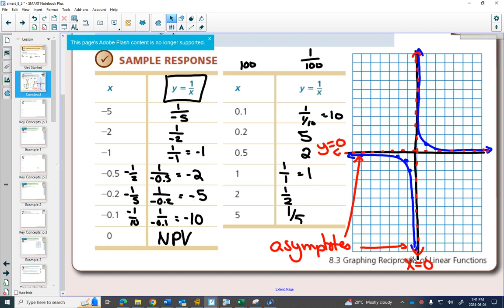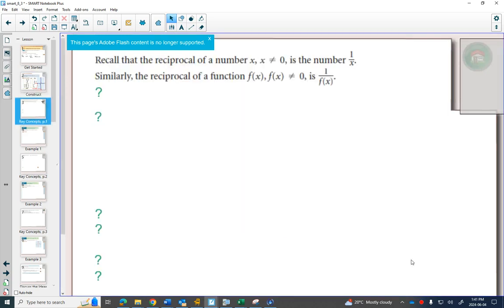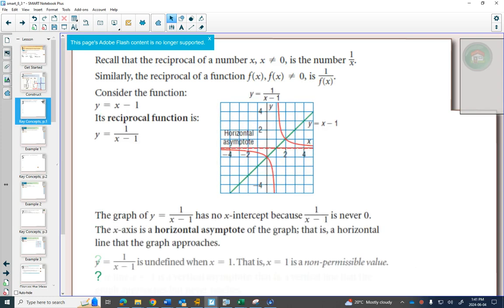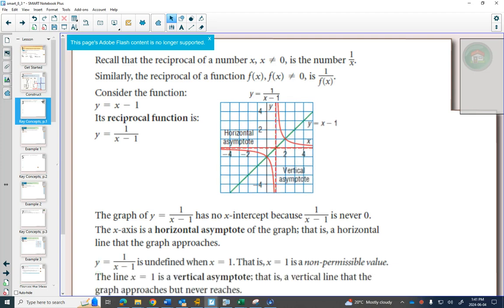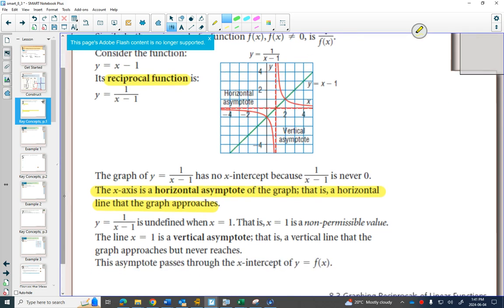And these are reciprocals. So we can highlight a few things on our notes here. We've got our function here. So these are called, we can highlight reciprocal function. So some things. We talked about the x-axis is a horizontal asymptote. And does it make sense that it has no x-intercept? Because if you do a reciprocal, can you tell me a fraction one over something that's equal to zero?